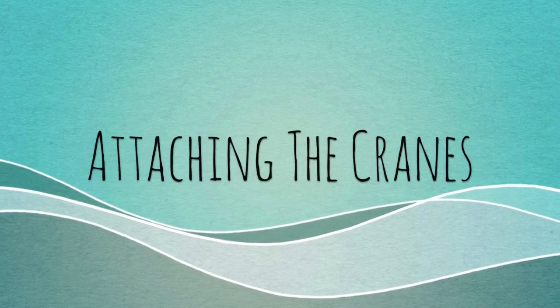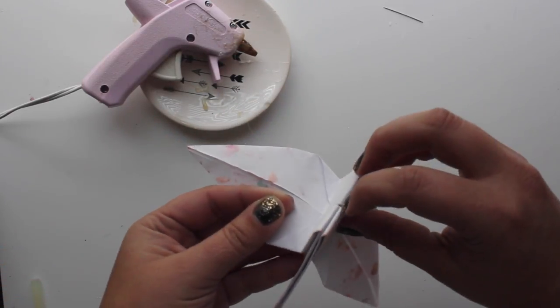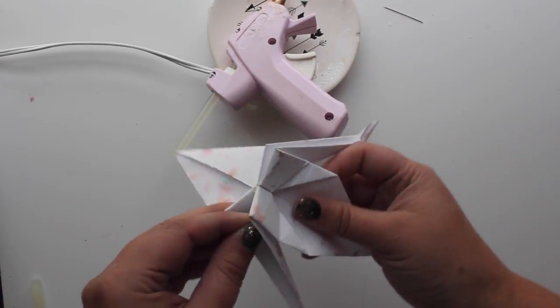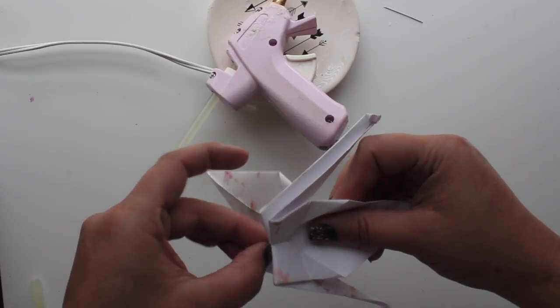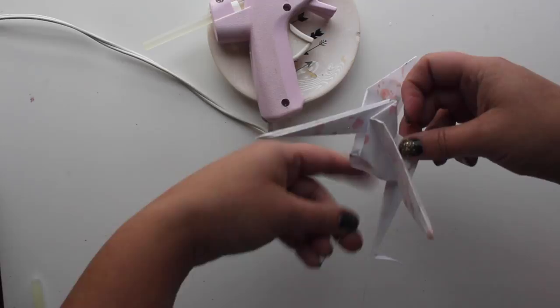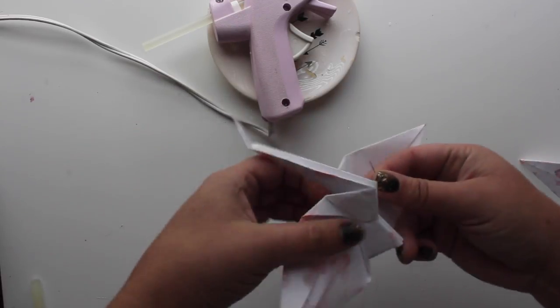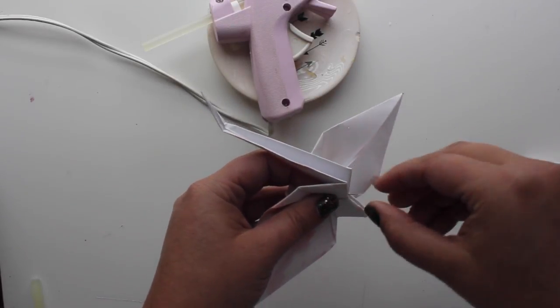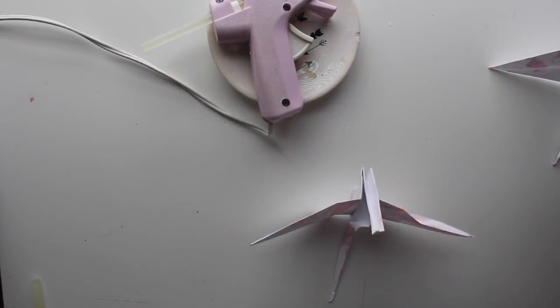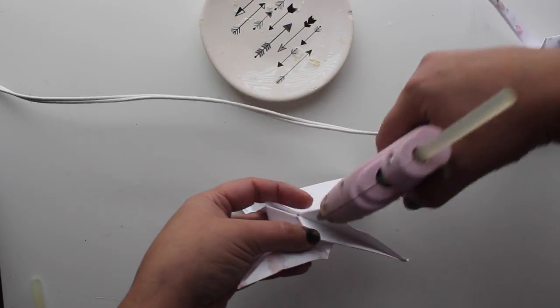Now we can attach the cranes. I am using clear thread so they appear to be floating. Add a tiny dab of hot glue at the bottom of the crane in between the folds. Stick one end of the clear thread in it. Use a needle to thread the other end through the center hole at the bottom of the crane and up through the middle of the back. Grab the next crane and poke up through the center hole and back. Adjust along the thread so it's the distance you'd like it to be from the first one. Then add a dot of hot glue in a crease and press the thread into it to keep the crane from sliding.